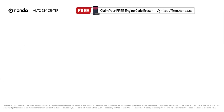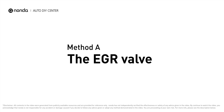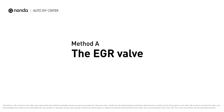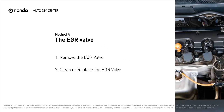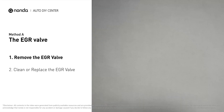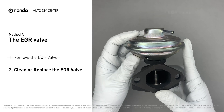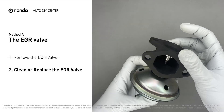Here are two of the most practical solutions to fix Ford's P0401 error code. Method A: the EGR valve. Looking at the engine from the front, the EGR valve is located towards the rear of the engine, just to the right side of the center. First, carefully remove the EGR valve from your car.